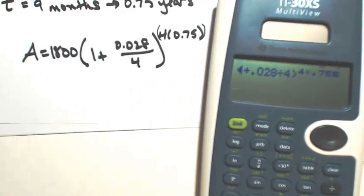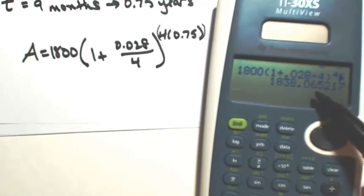Okay, so whatever calculator you have, this is the answer you should end up getting. So 1,838. And since we're talking about a bank, they're probably not going to round up, so I'm going to keep that at six cents, $1,838.06.